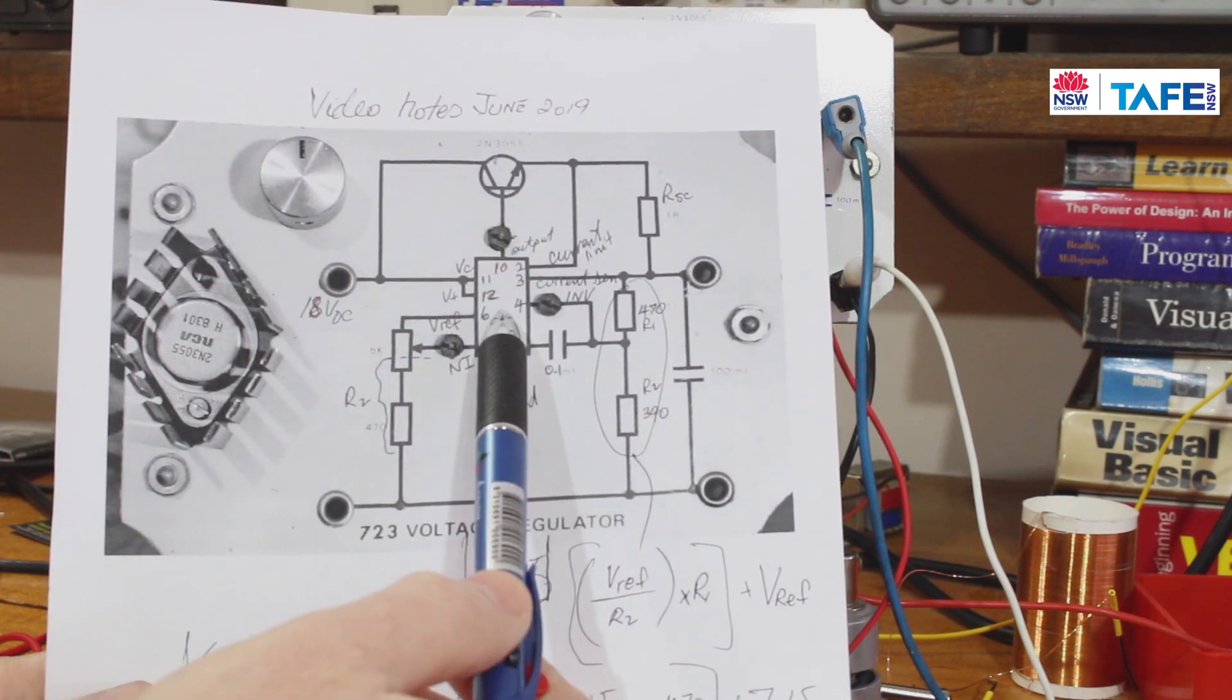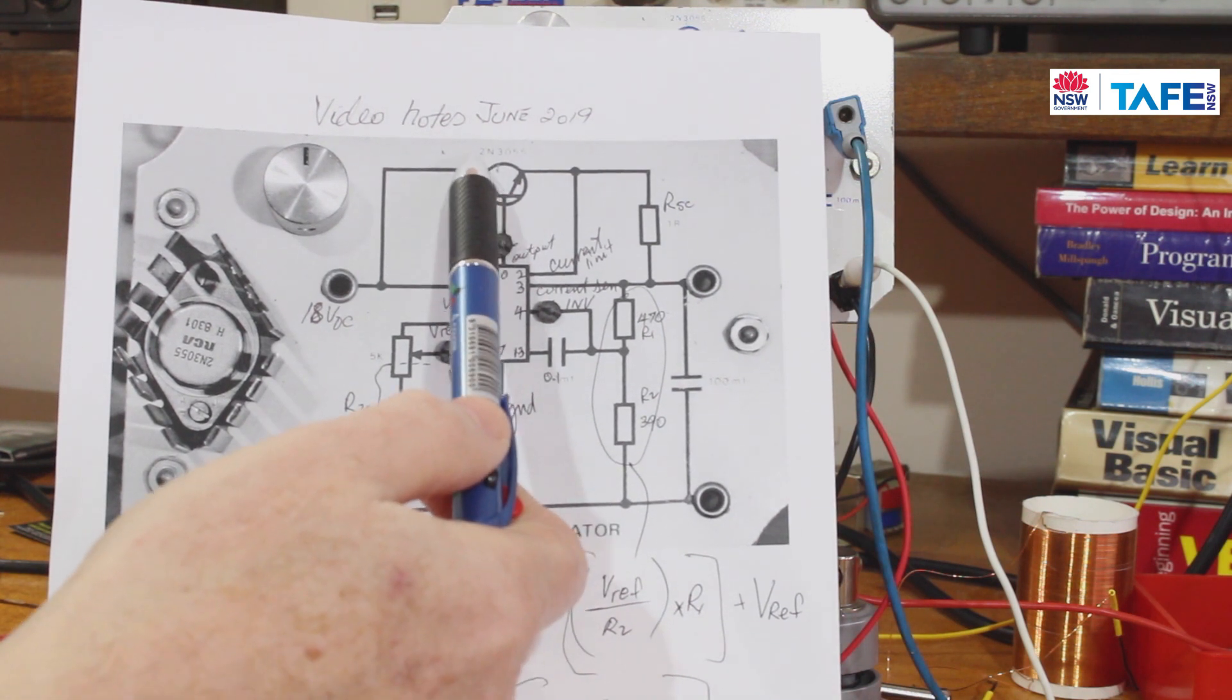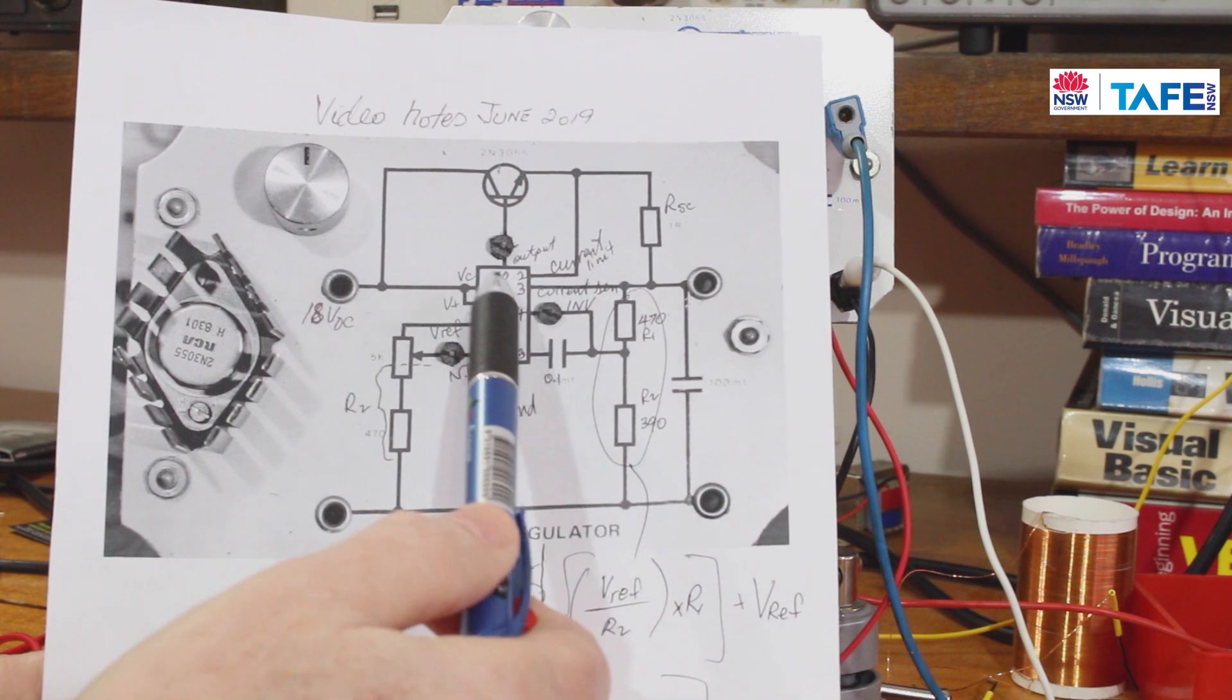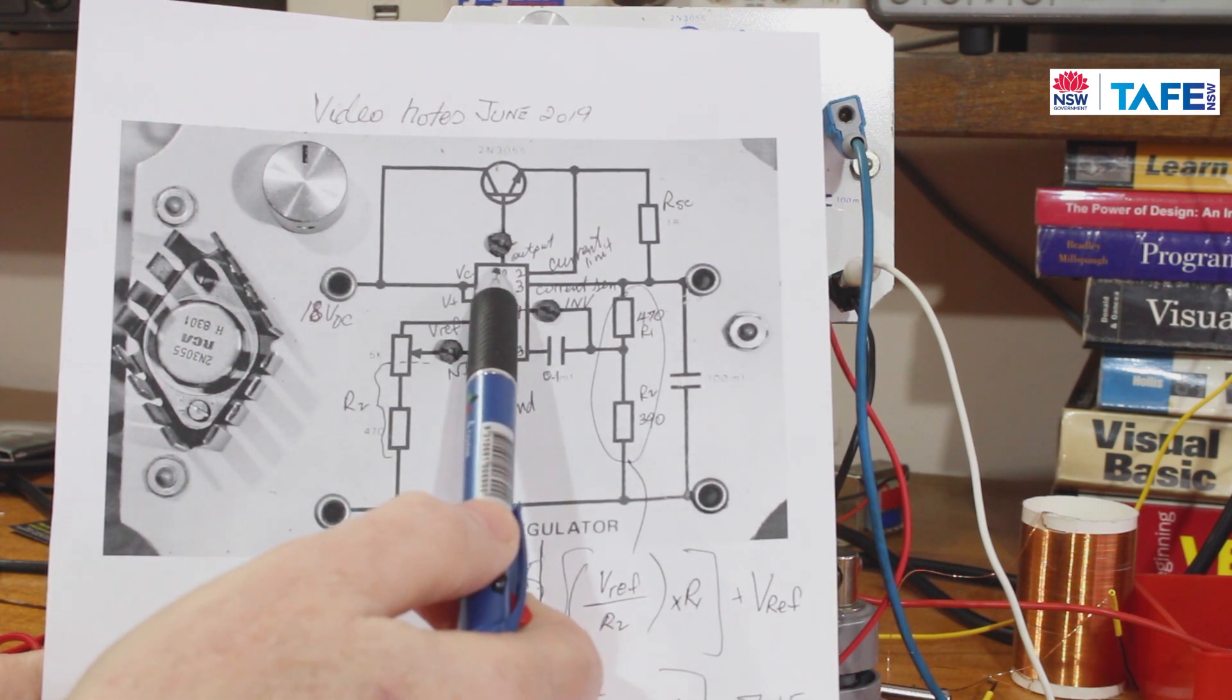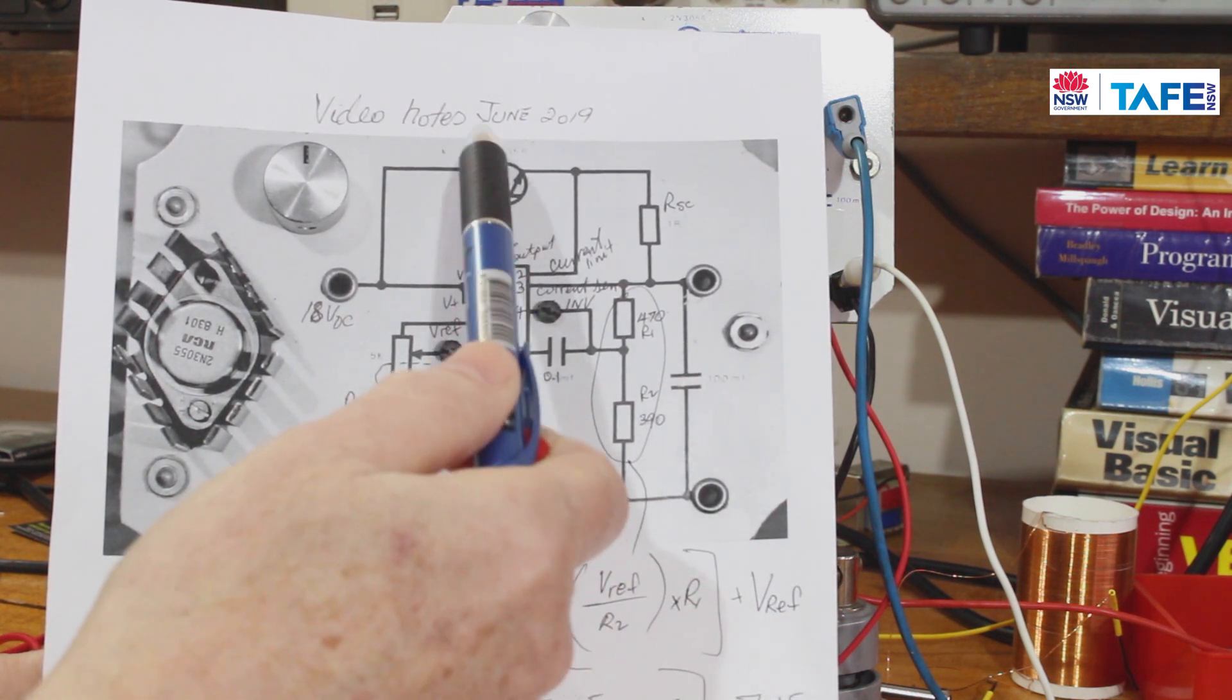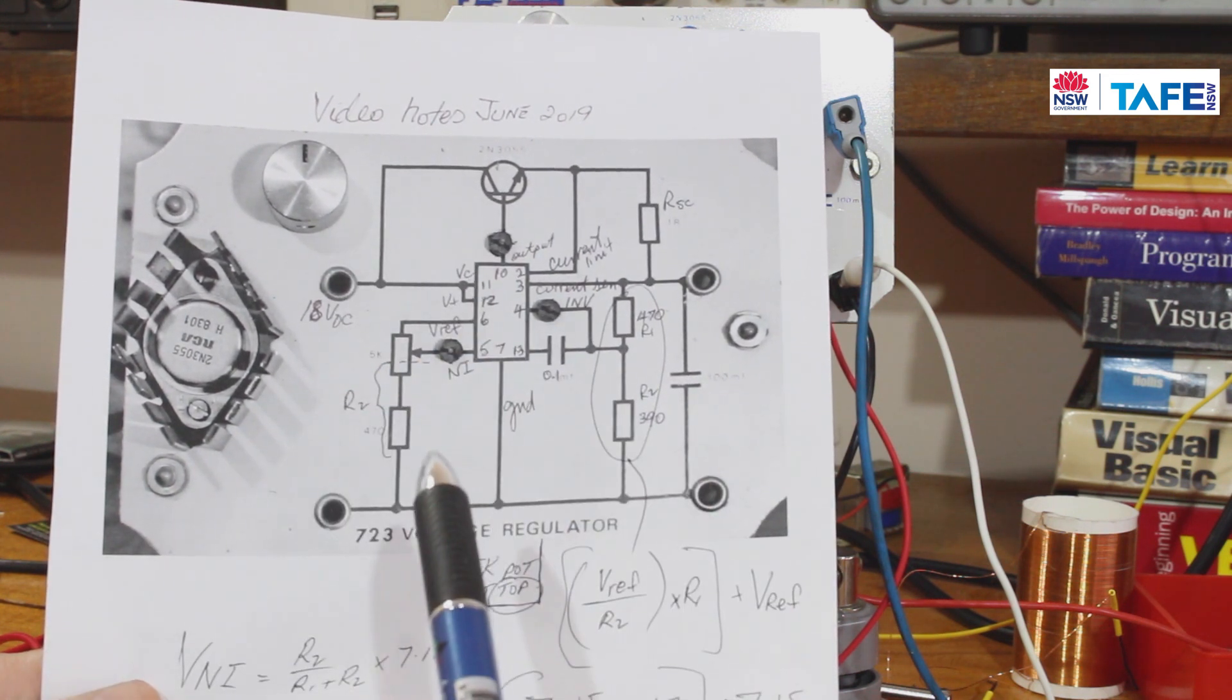This is a series pass transistor used in this configuration. It's a power transistor, silicon 2N3055, very very common. The output terminal on the LM723 is pin number 10, and that's driving the base current into the 2N3055. This is the critter that does all the hard work in this particular circuit diagram.